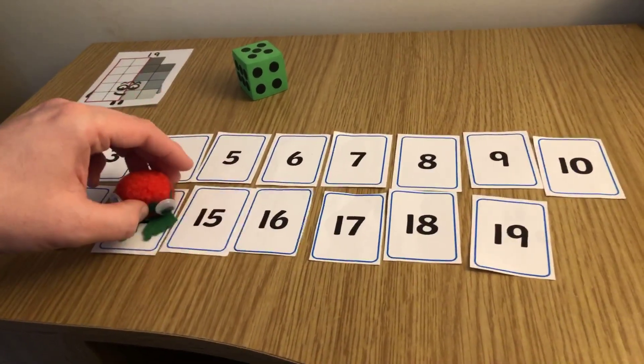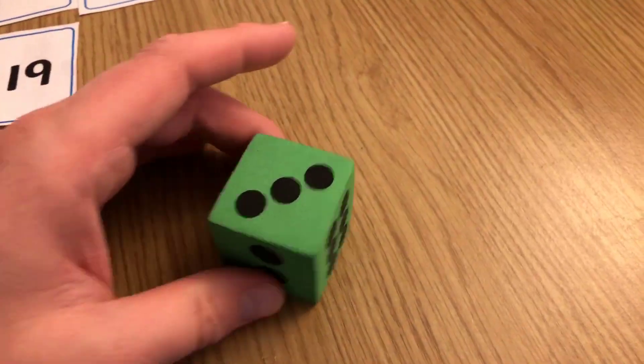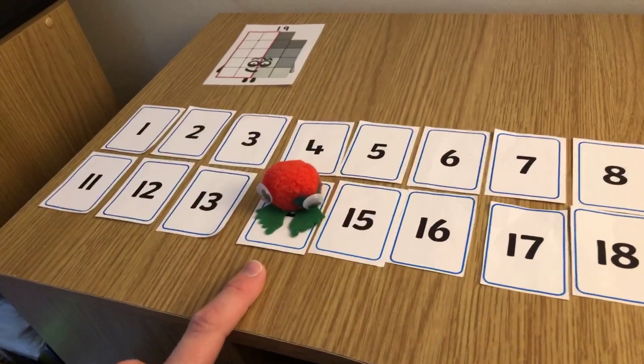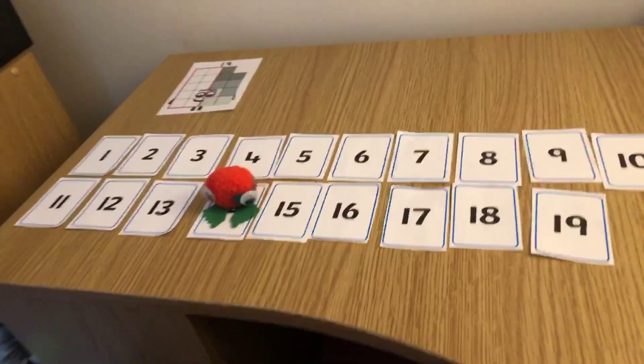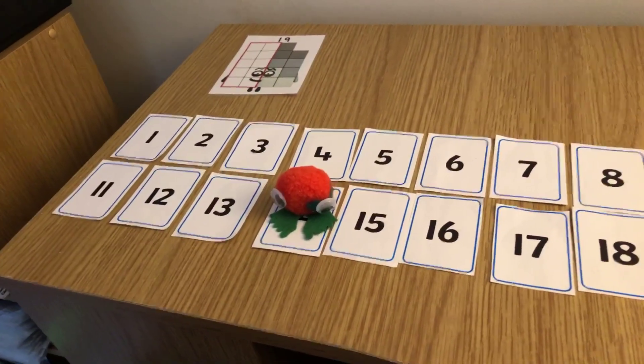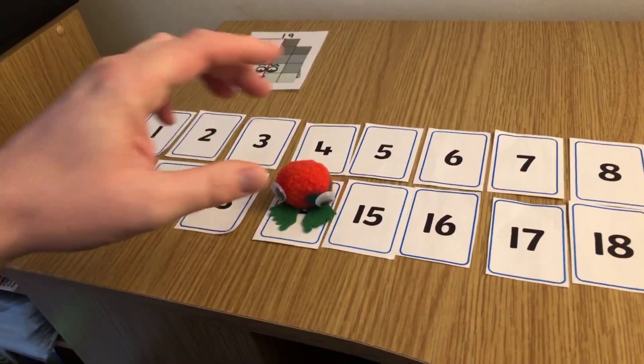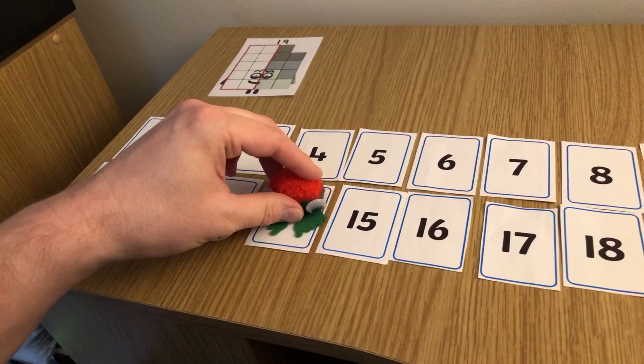Alright, let's have another go. Let's start on 14, let's roll the dice. What do we get this time? Shout it out. 3. So we're on 14 and we're going to go back 3. Can you predict which number it's going to land on?